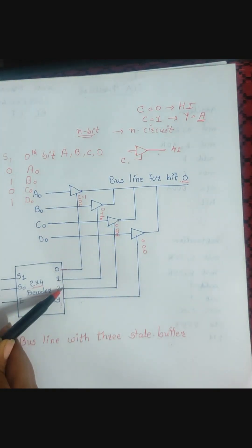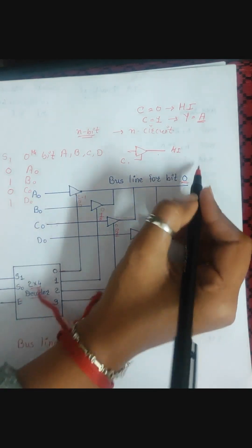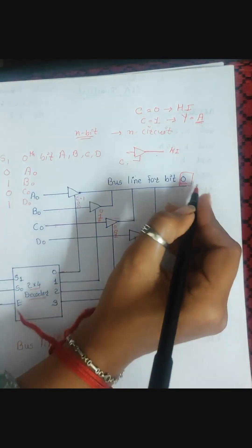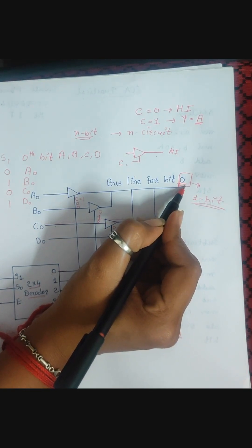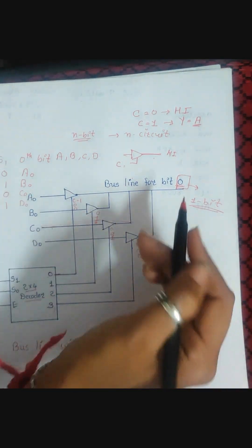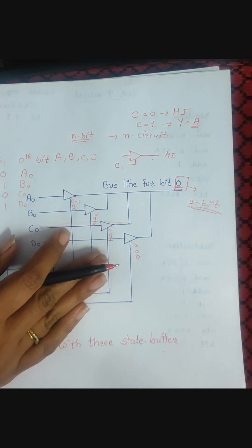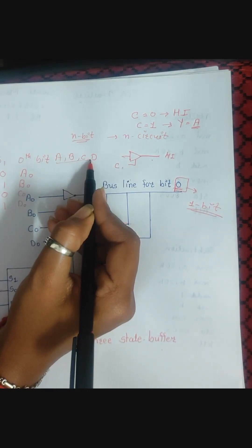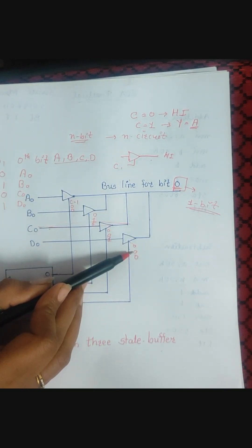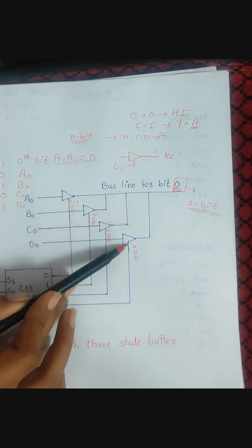If line 2 is selected, that buffer becomes a closed circuit and the others work as open circuits, and whatever that input is gets passed to the zeroth line. Remember, this is only for one bit — the zeroth bit. If you need to transfer four bits and create a common bus system for four bits, you need four such circuits: one for the zeroth bit, one for the first bit, the second bit, and the third bit. Similarly, if you need eight registers instead of four, you will need eight such buffers.